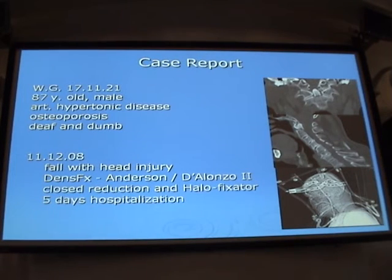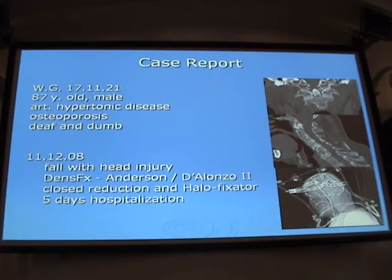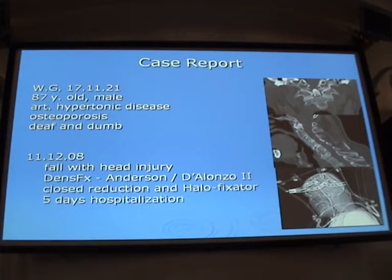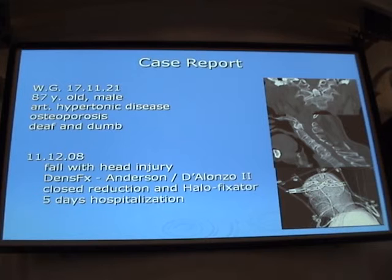I want to show you one case — a very difficult case which shows that conservative treatment is not always the best way, and we sometimes have to switch from one treatment approach to another. It's an 87-year-old male with multiple diseases, deaf and mute. He fell with a head injury at home and had an odontoid fracture type 2, as you can see on the CT scan. We performed closed reduction because of his age and comorbidities, done with a halo fixator. Five days hospitalization.